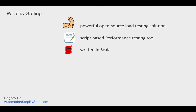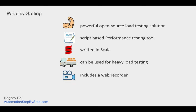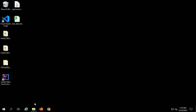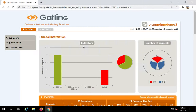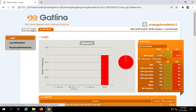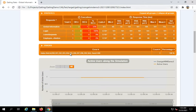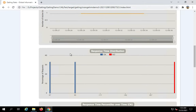Gatling is written in Scala, and the scripts we create for our performance tests can be in Scala, Java, or Kotlin. It can be used for heavy load testing as it is very powerful. It includes a web recorder - a GUI web recorder we can use to record and generate our performance tests. With Gatling we can also create beautiful and colorful reports, and I'll show you an example of one.